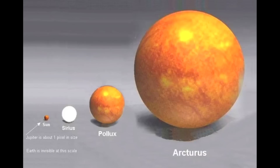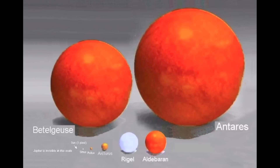When a star has expanded to this point, it is much larger than during its main sequence lifetime. An image shows the Sun compared to Sirius, Pollux, and Arcturus. But compared to red giant stars like Betelgeuse and Antares — where the Sun is just one pixel — the scale is enormous. Betelgeuse and Antares are so large that if placed in our solar system, their outer layers would extend beyond the rocky planets.